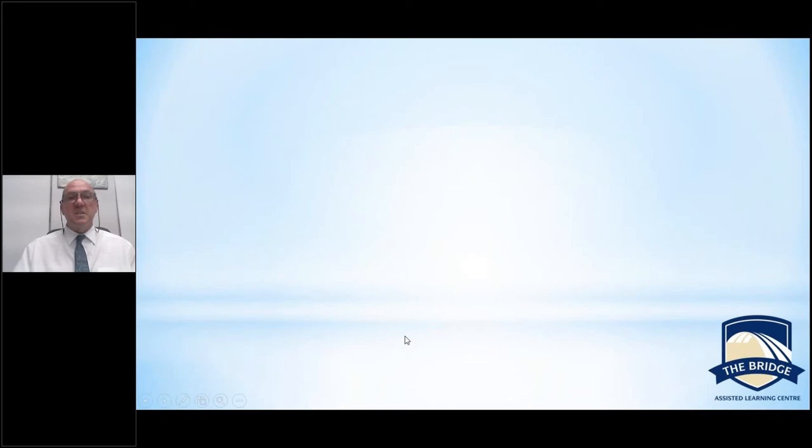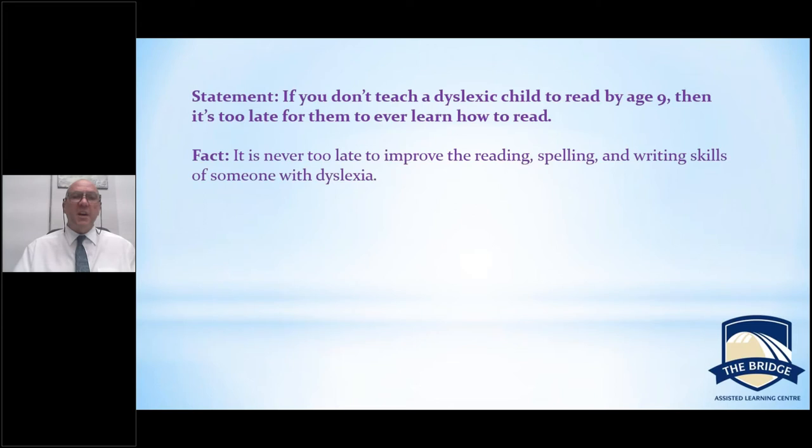If you don't teach a dyslexic child to read by age 9, 10, or 11, it's too late — again not true. Always we can improve reading, spelling, and writing for someone, even an adult. There are many adults who really learn to read well only as adults — it's almost like they have the confidence to try then, which they didn't have when they were younger. So definitely it's never too late. Obviously earlier is better, but never too late.